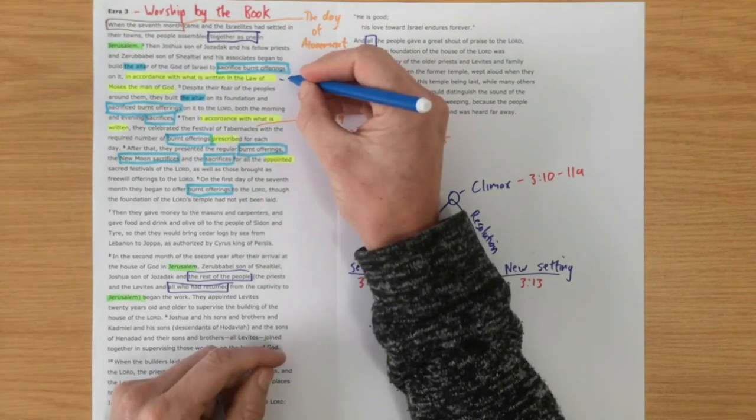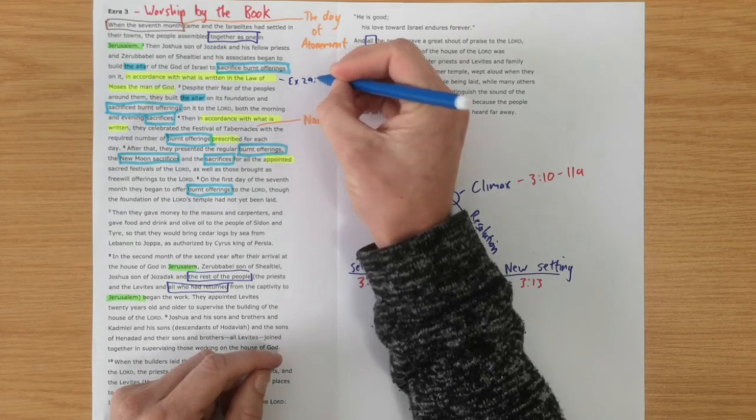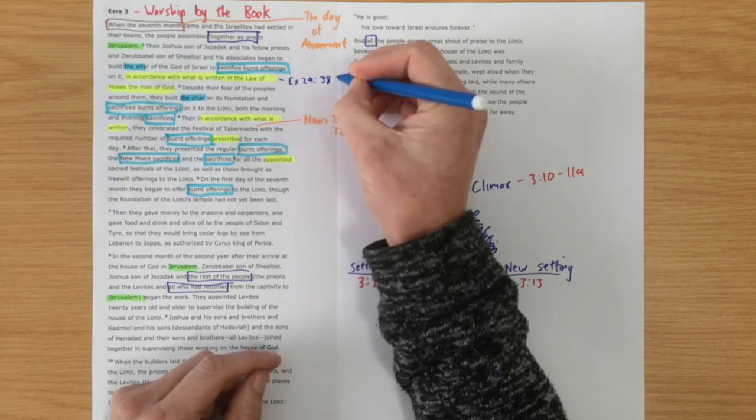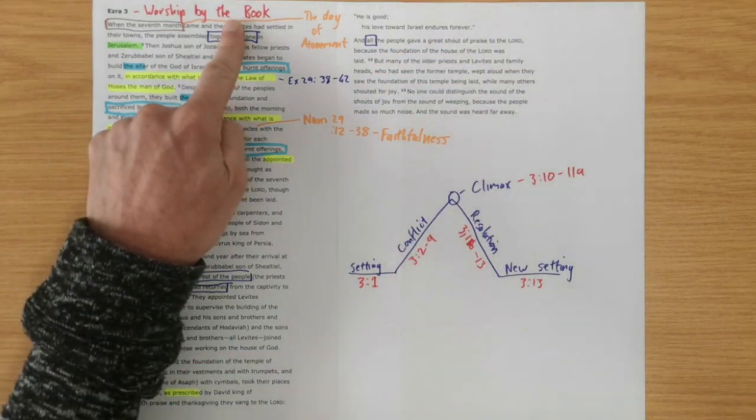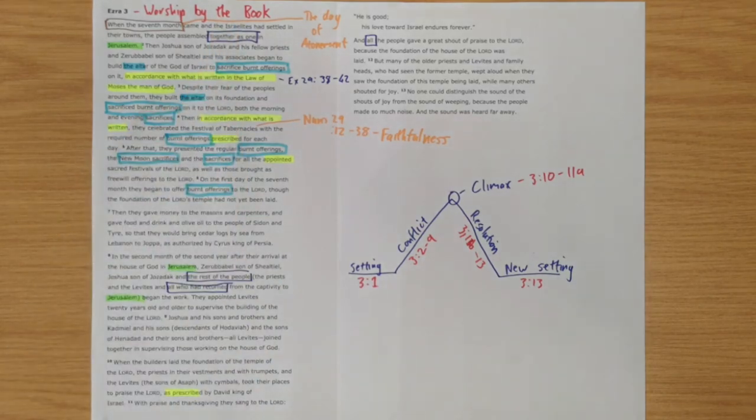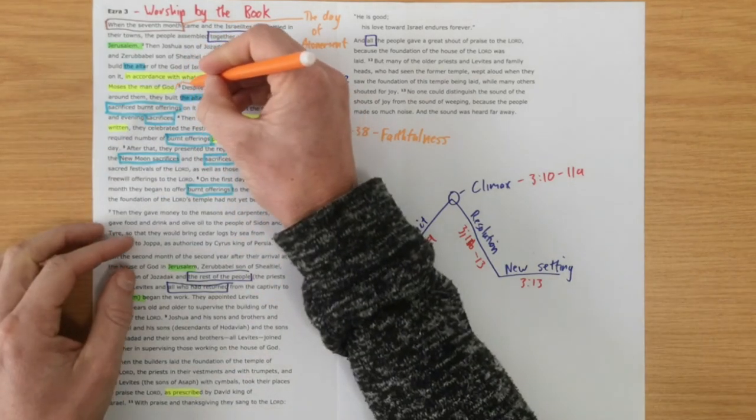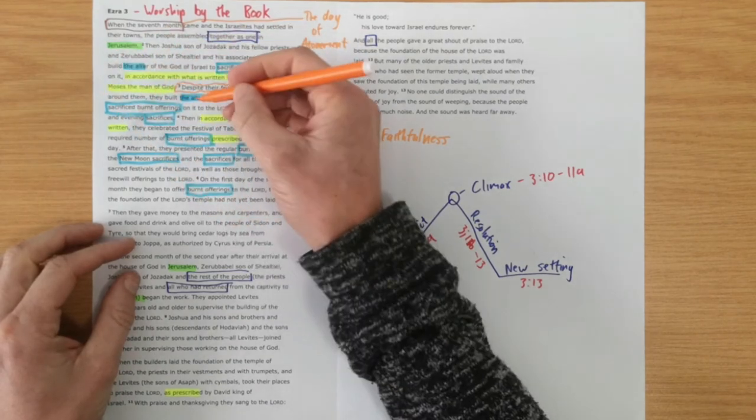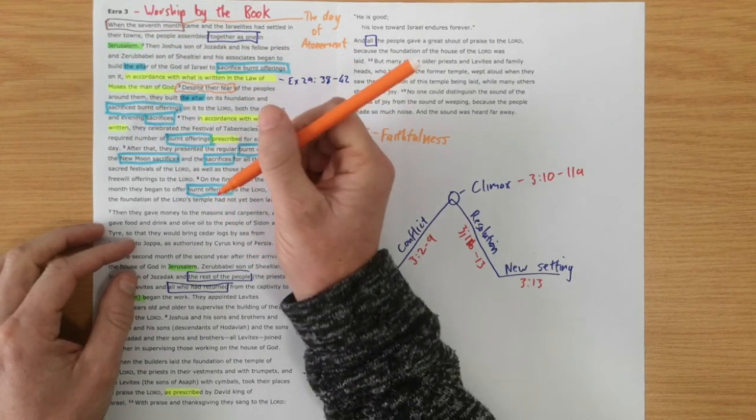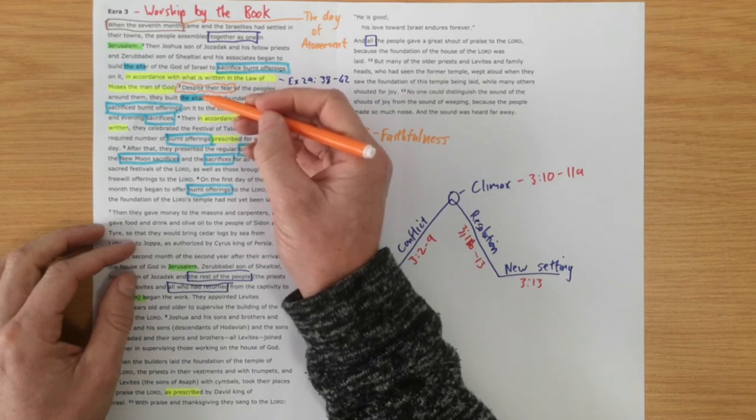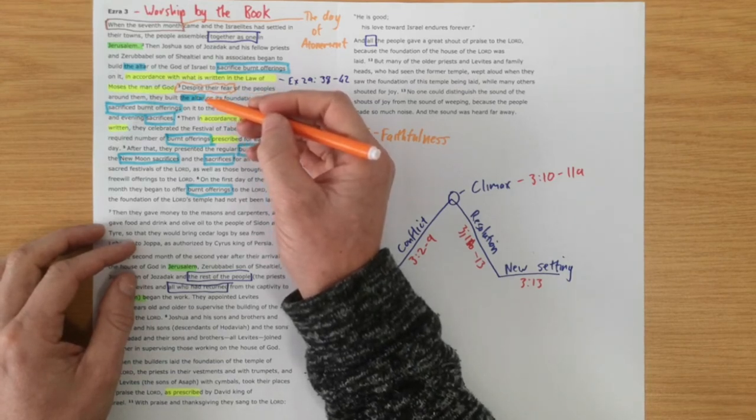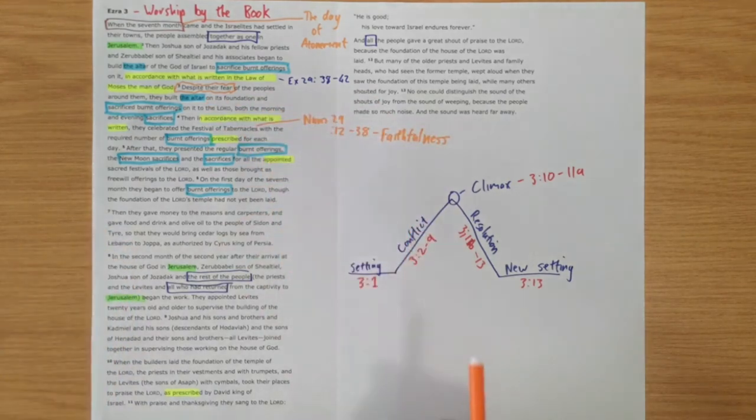In accordance with what is written, you can go and read Exodus 29 verse 38 to 42. They are doing everything by the book, they want to get this right. We see here it says despite their fear, and this could also be translated better because of their fear. So it's not, it's more than just despite their fear, in spite of their fear, but actually because of their fear they seek to worship God. And because they want to show that they fear God more than they fear the people around them, they want to worship God rightly.